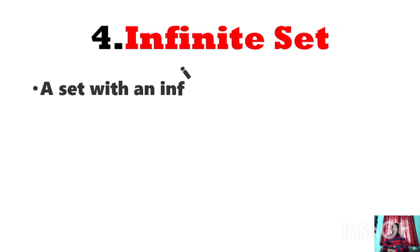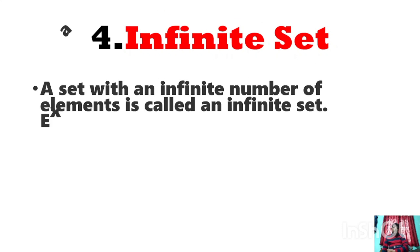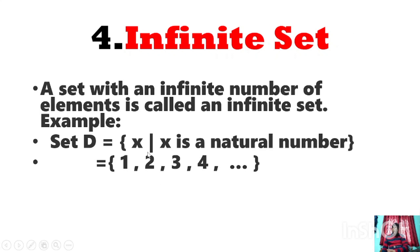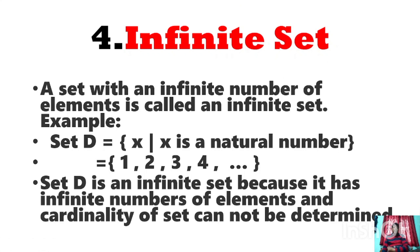Infinite set: a set with an infinite number of elements where you cannot find out how many elements the set has — the cardinality of such a set cannot be determined. For example, set B = {X : X is a natural number}, written in roster method as 1, 2, 3, 4, etc. This is clearly an infinite set because you cannot find how many elements it has. The dot sign shows the set is infinite. The cardinality cannot be determined.